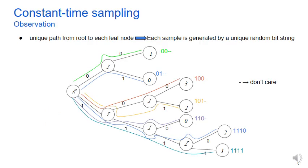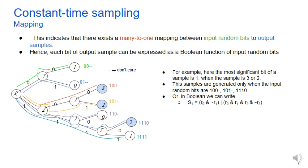Now, in our work, we observed that since DDG is a tree, there exists a unique path from root to each leaf node. This implies that each sample is generated by a unique input random bit string. Now, notice that as a single sample value can occur in multiple leaves, this implies that there is a many-to-one mapping between the set of input random bits to the set of output samples.